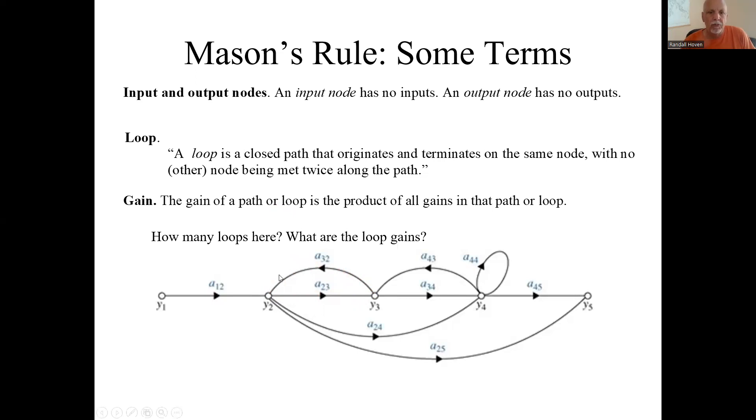Similarly for a path, the gain of a path is the product of all the gains in that path. So this forward path from Y1 to Y5 that just goes straight across is the product of all these guys: A12, A23, A24, A45.